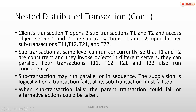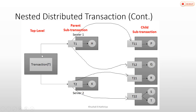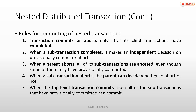Now let's discuss the rules for committing in nested transactions. Rule one: a transaction commits or aborts only after its child transactions have completed. If we say transaction T is complete, then it must have completed both T1 and T2. If T1 or T2 has aborted, then we cannot say transaction T is complete.